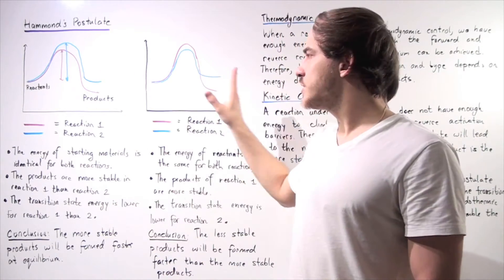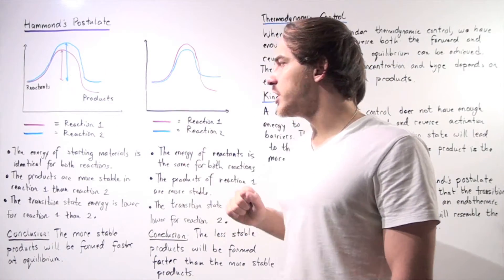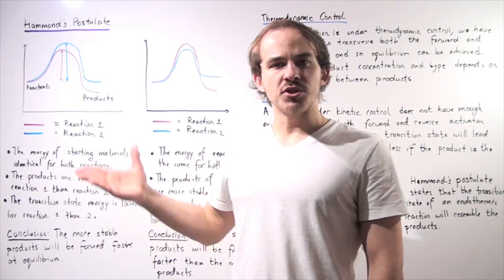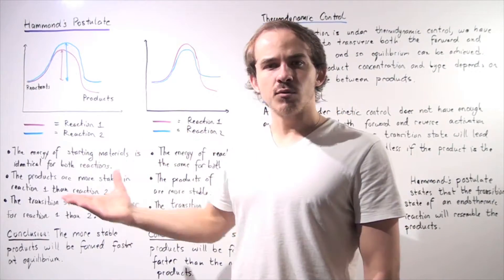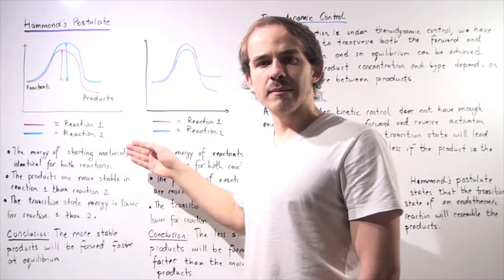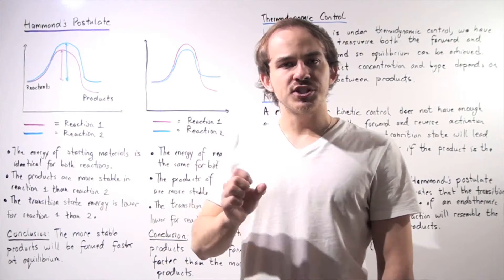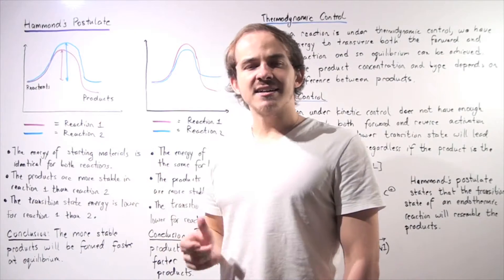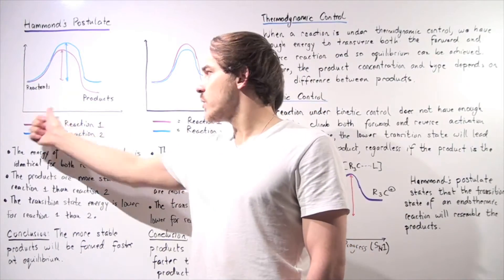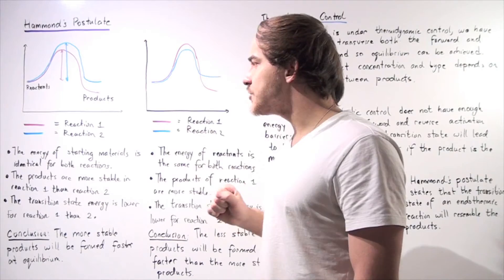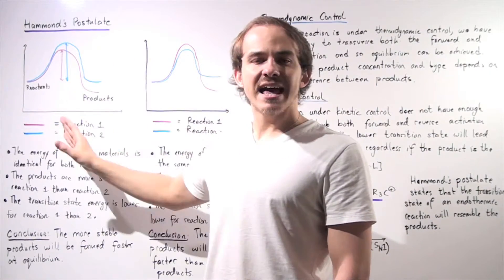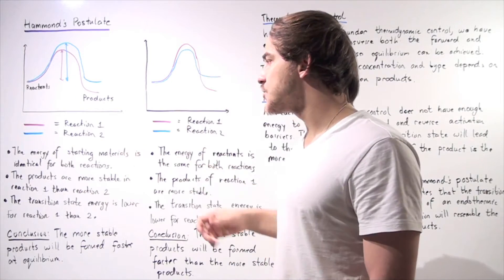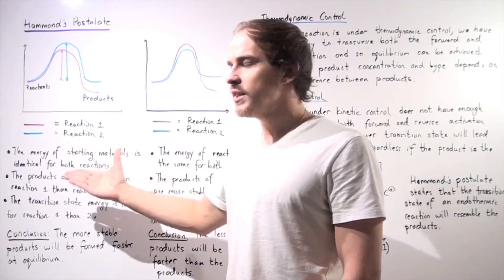Let's begin with the following two situations. In situation one, we have two reactions taking place — reaction one given with the purple line, reaction two given with the blue line. Here's our energy diagram. The y-axis is our change in Gibbs free energy under standard state conditions, and our x-axis is our reaction progress. Notice that both reactions begin with the same exact reactants, meaning the energy of the starting materials is identical for both.